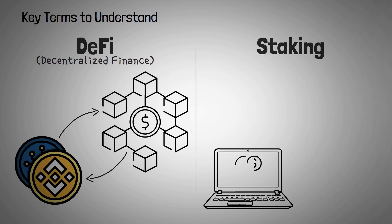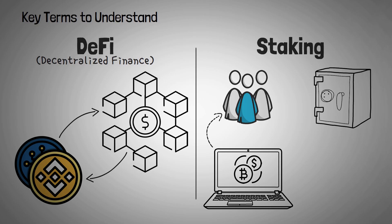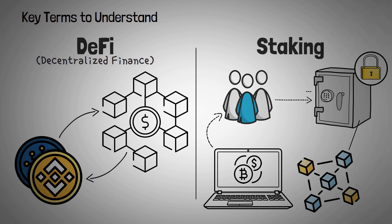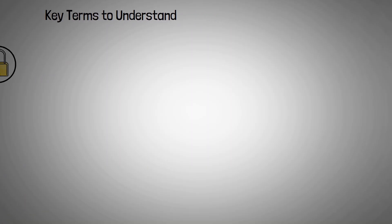Staking is the mechanism by which people buy a cryptocurrency and then lock it up for a period of time as an incentive to help secure the network. In return for behaving, they earn a little bit of that crypto as rewards. If they misbehave, they have something to lose.